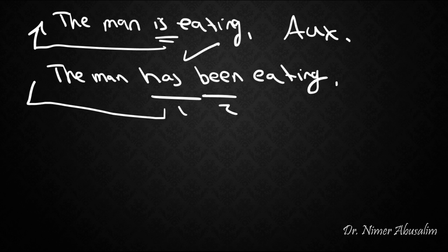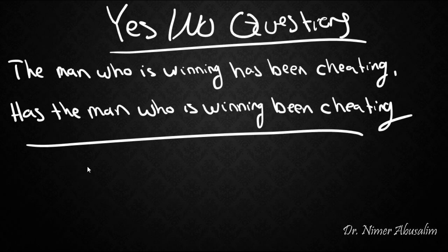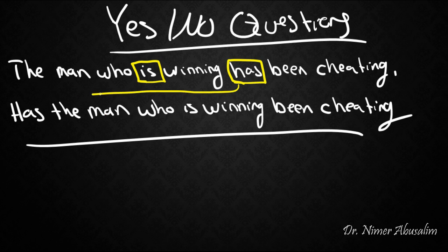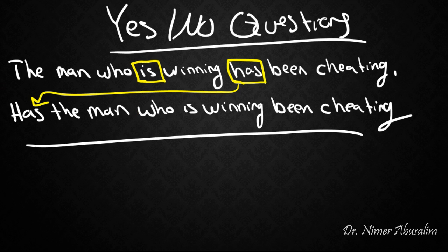The answer is the first one — we move the first auxiliary. But now let's go back to our original sentence: 'the man who is winning has been cheating.' The first auxiliary in that sentence is 'is,' but we ended up moving 'has.' So what is the rule? Perhaps we need to say we move the first auxiliary from the main clause, not a subordinate clause.